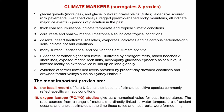Climate markers, sometimes referred to as surrogates or proxies. Glacial gravels called moraines, and glacial outwash gravel plains referred to as tillites, extensive scoured rock pavements, U-shaped valleys, ragged pyramid-shaped rocky mountains, all indicate major ice events and periods of glaciation in the past. Thick coal accumulations indicate temperate and tropical climatic conditions. Coral reefs and shallow marine limestones also indicate tropical conditions. Deserts, desert landforms, salt lakes, evaporites, calcretes and calcareous carbonate-rich soils indicate hot arid conditions.